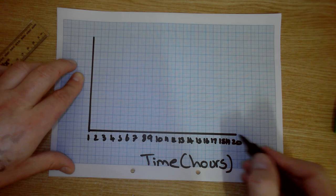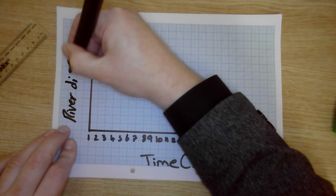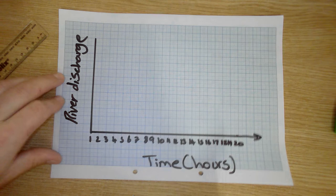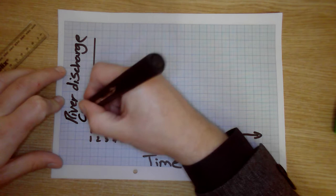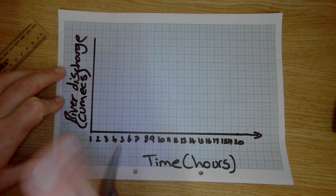And obviously, the further along you are, the longer it's been. Up the side, we have got river discharge. Don't have to complicate this. Discharge is just the amount of water in the river, and we represent that with a line. And this is measured in cumecs or cubic metres per second of water. So, if you imagine a cube, a metre tall, that's how much water's going in there.